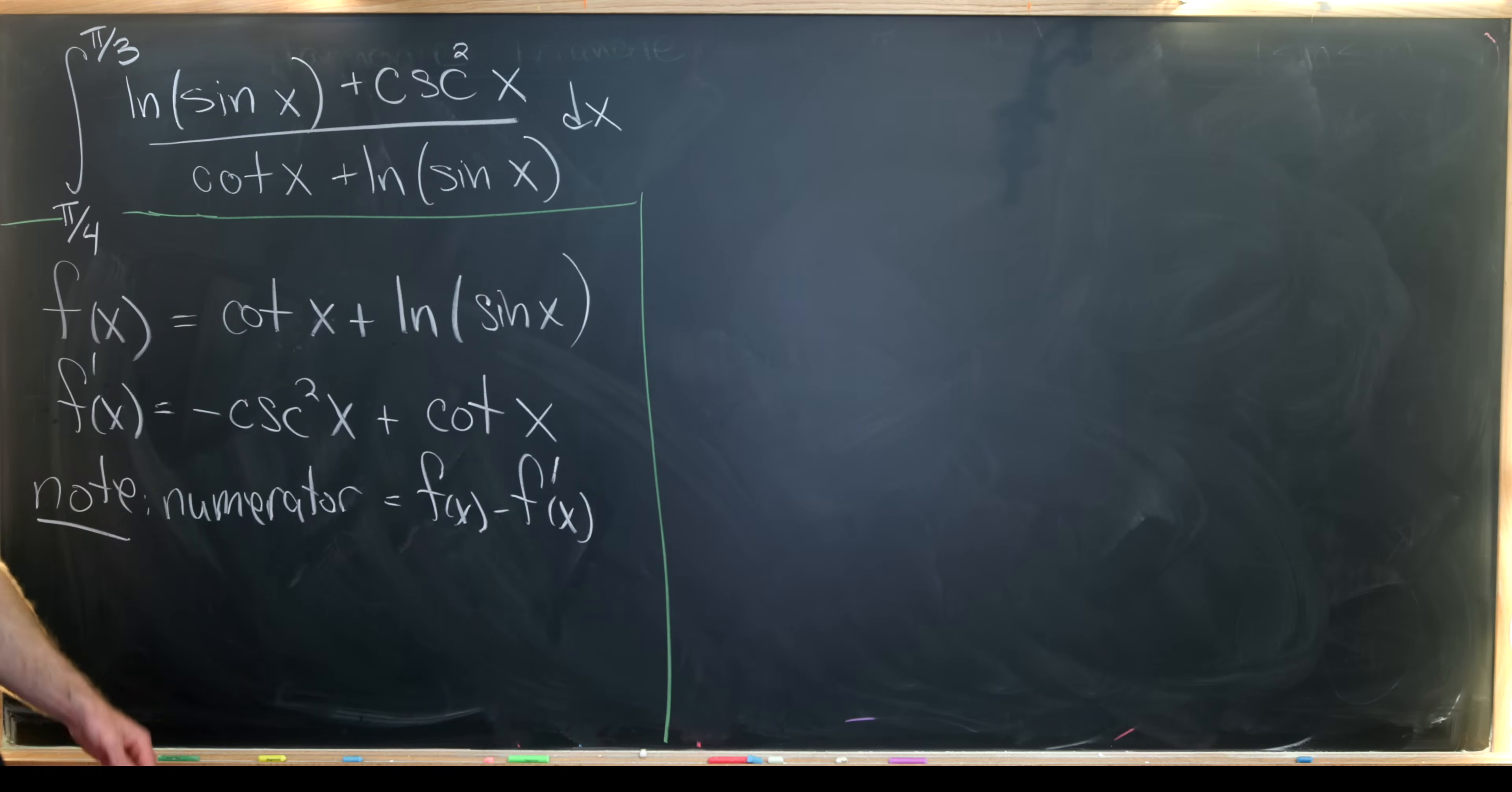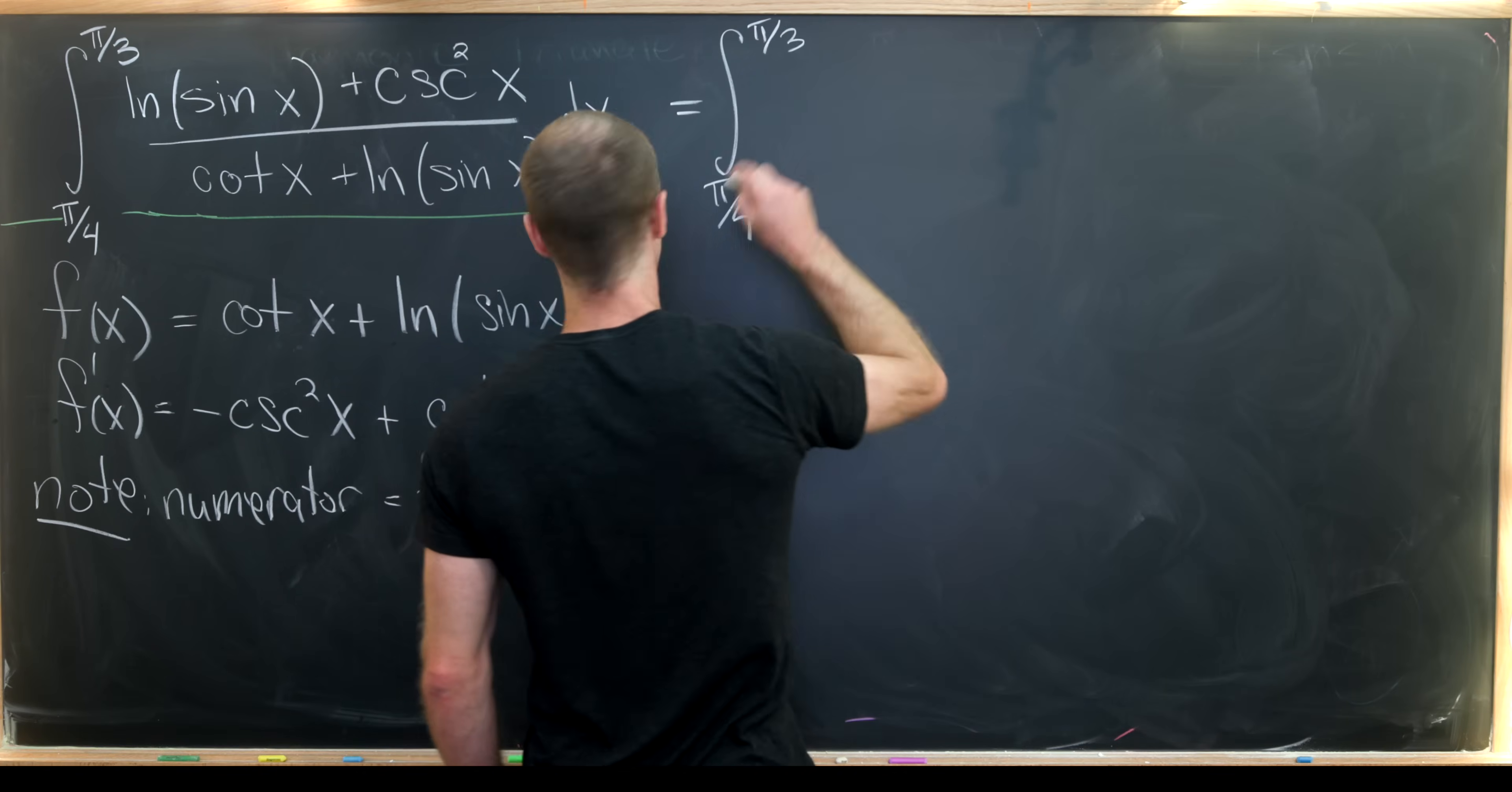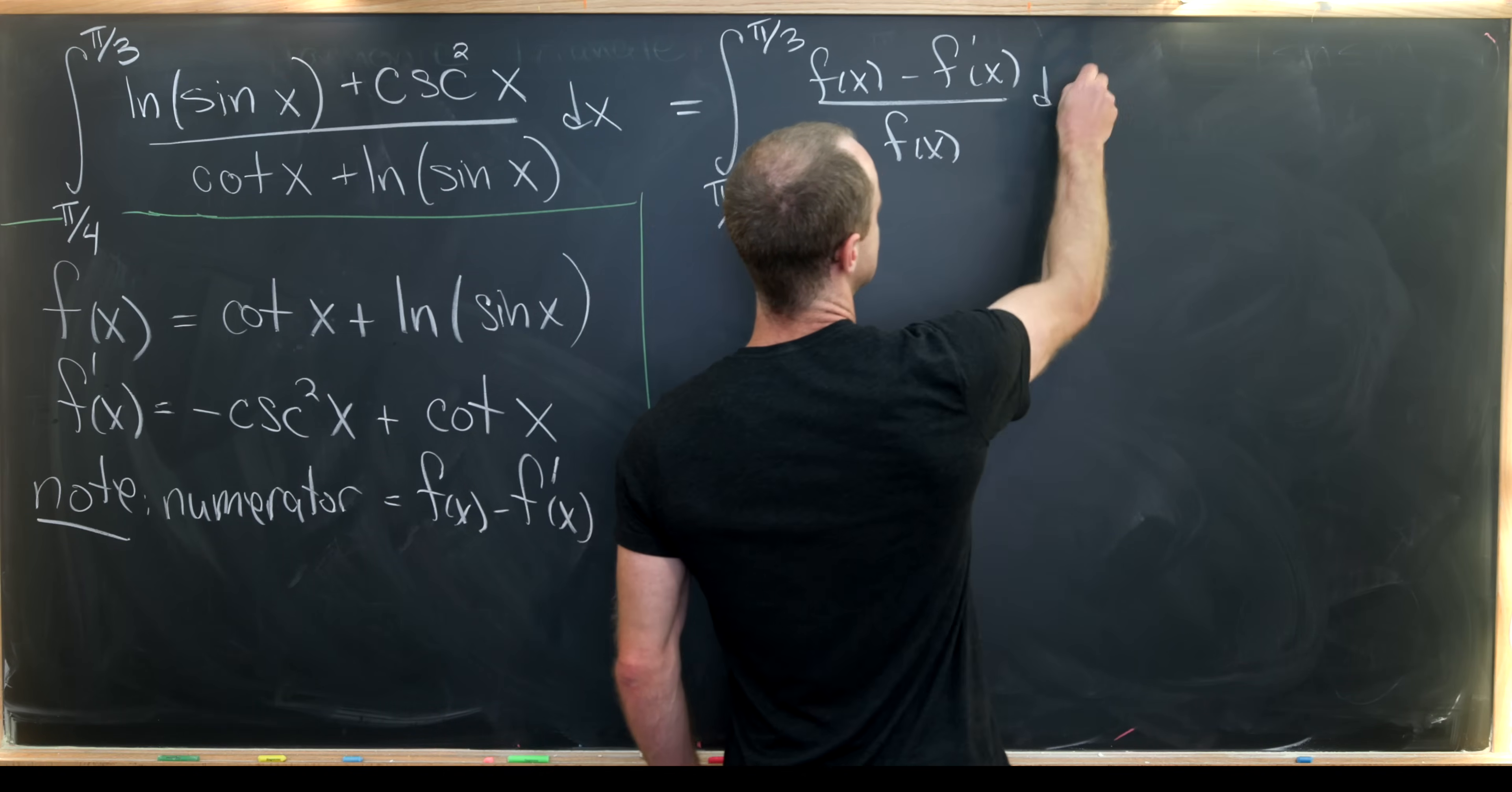So let's see what that does for our integral. Now we can rewrite this as the integral from π/4 to π/3 of f of x minus f prime of x over f of x dx. Great.